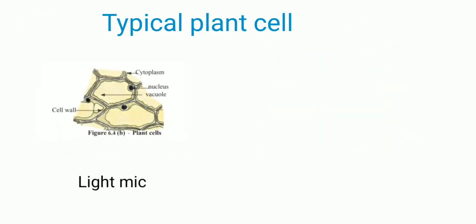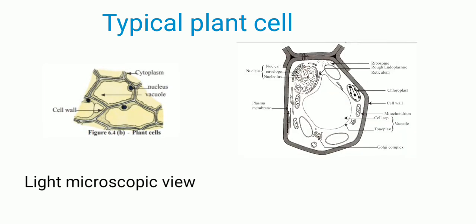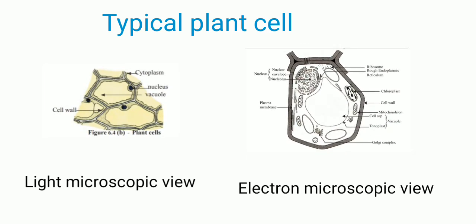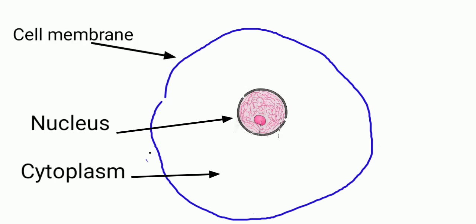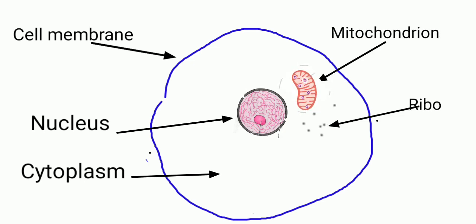Here you can see the structure of plant and animal cells. Only some organelles can be observed under the light microscope — for example, the nucleus. All cells contain a round structure called the nucleus, surrounded by a jelly-like substance called cytoplasm. The nucleus and cytoplasm are enclosed within a very thin layer called the cell membrane.